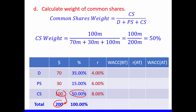Remember, the total weight or total percentage must be 100%. So 35% plus 15% plus 50% gives us 100%.